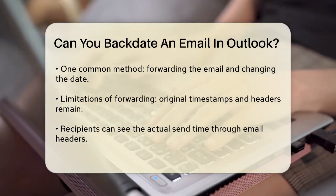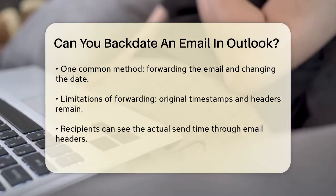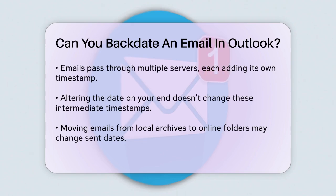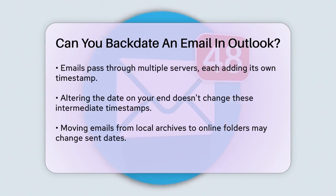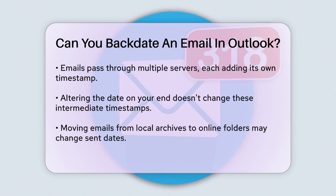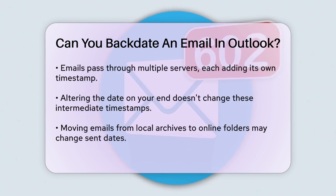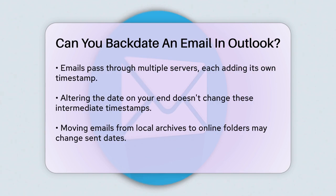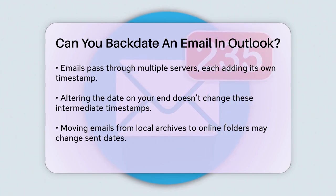Another important point is that emails go through multiple servers and relays before reaching the recipient. Each of these servers adds its own timestamp, which cannot be easily altered. So even if you manage to change the date on your end, these intermediate timestamps will still reveal the true timeline of the email's journey.